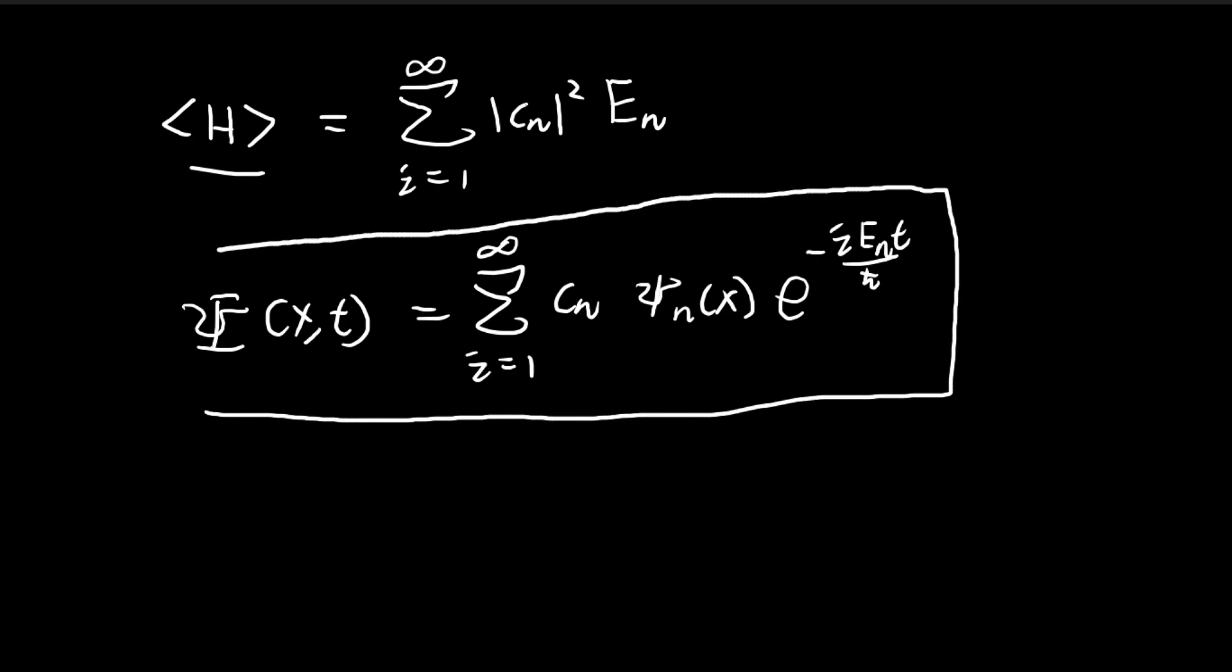And then it was proved in the book, so I'm not going to go over that again, that you can take the constant in the front, cn, and then just square it. And this is going to be the probability that the energy state is going to be at the nth energy state.